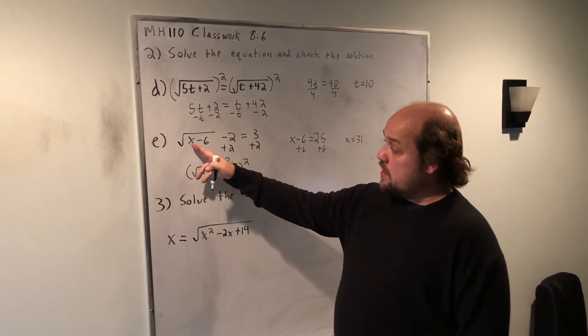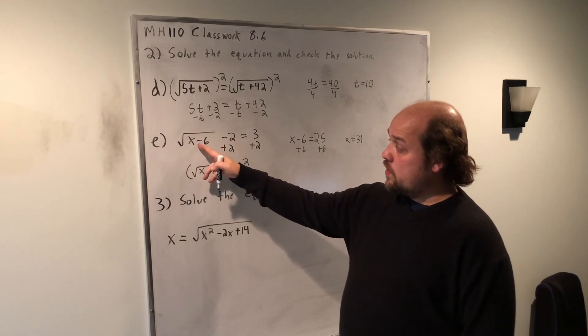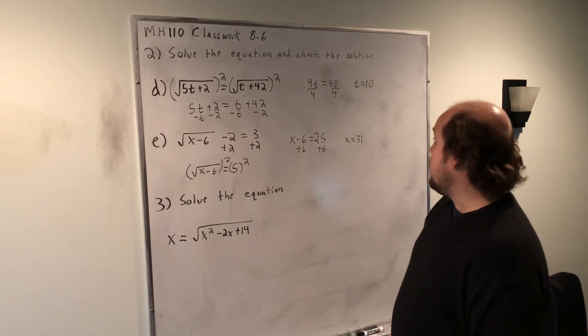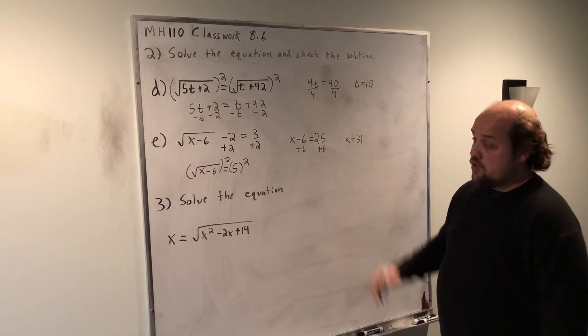If I put the 31 back in, 31 minus 6 is 25. The root of 25 is 5, and 5 minus 2 does equal 3. So, this is the correct solution to the equation.